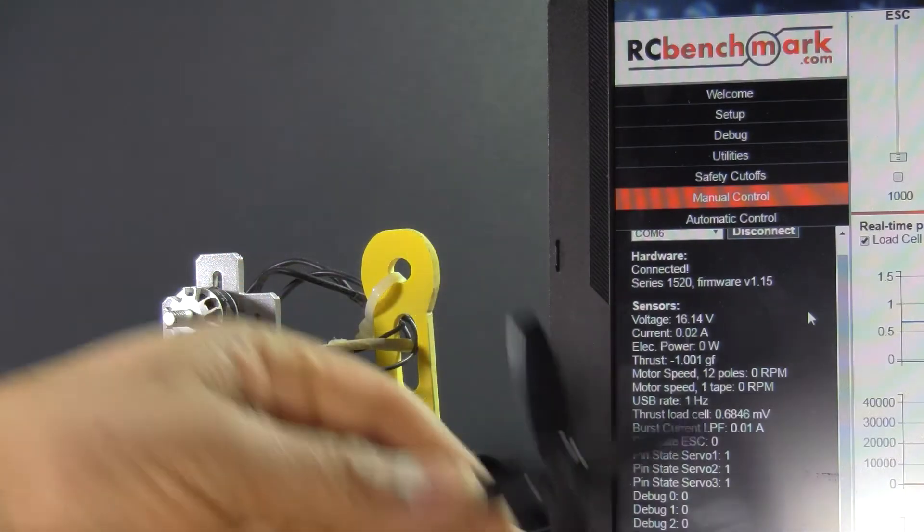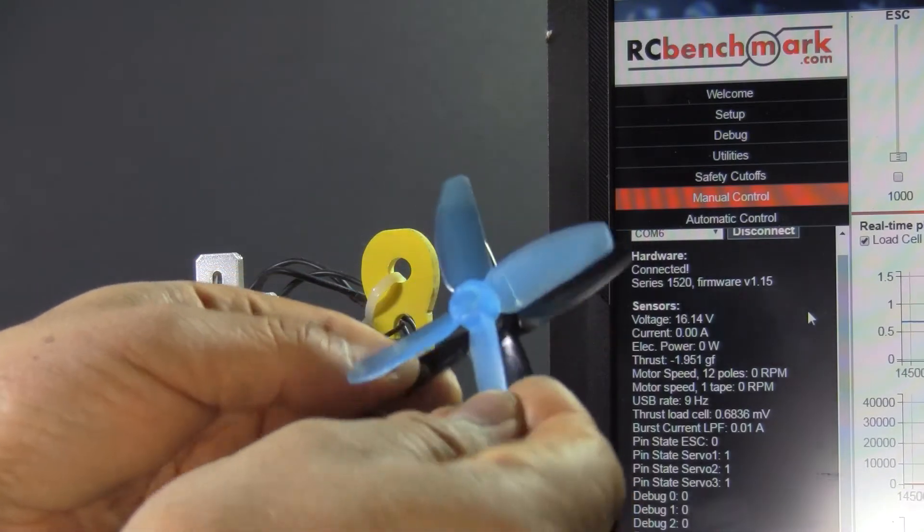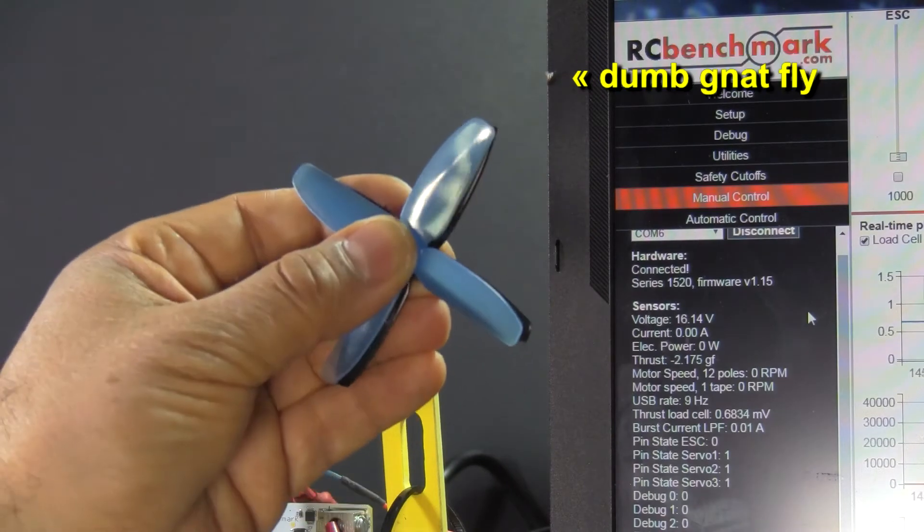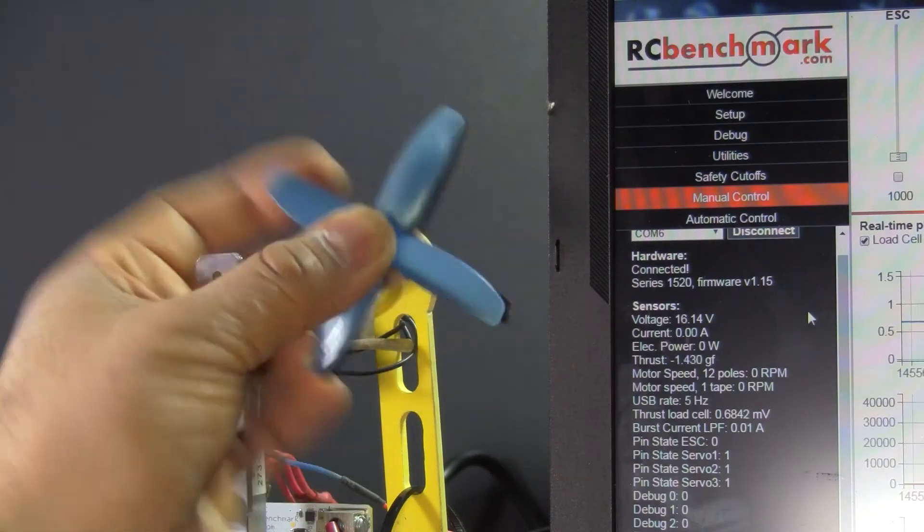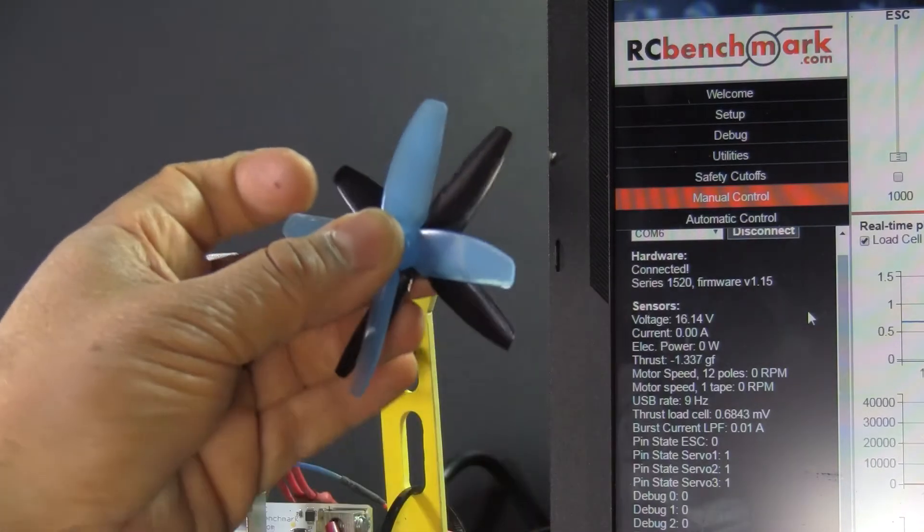So if you want to compare it to the Team Racecraft, you can see the blades are, they have about the same area but the profile is different.